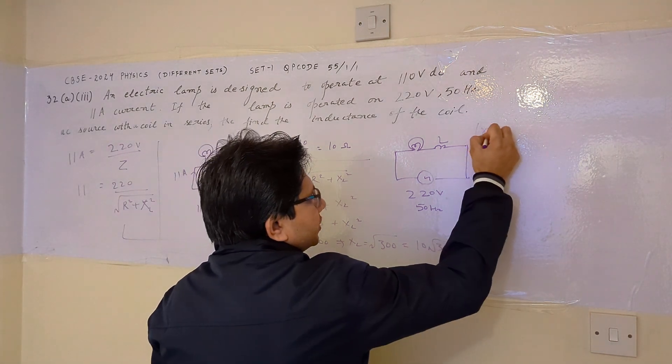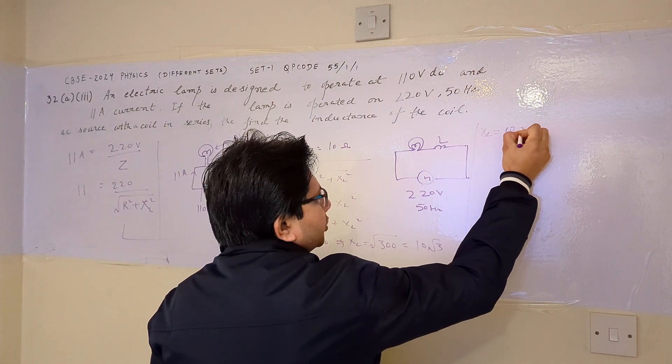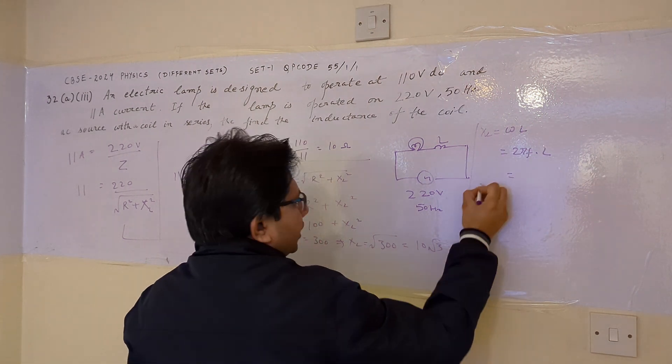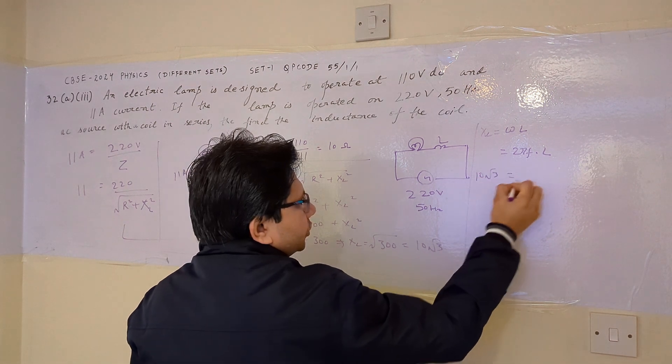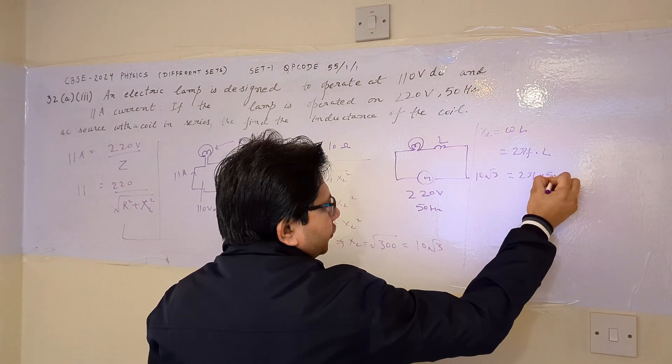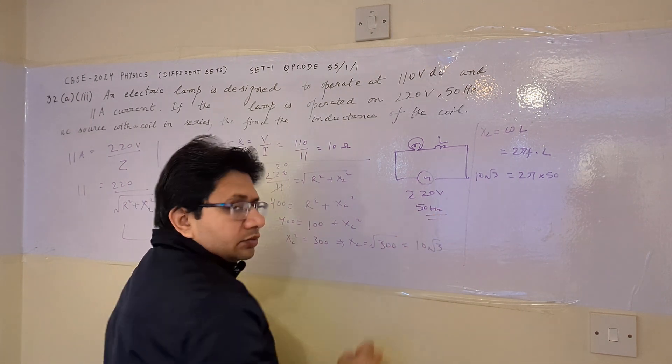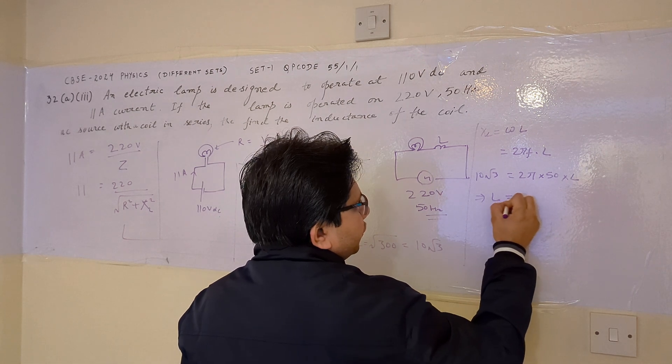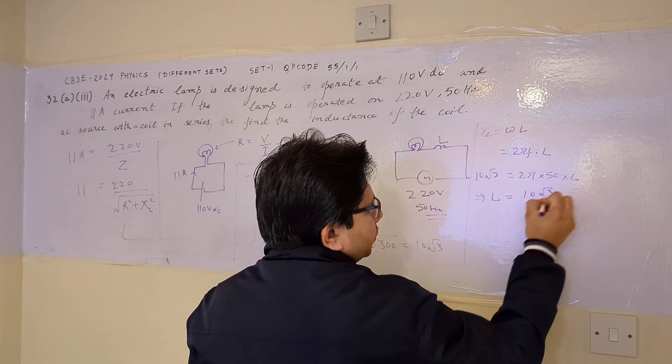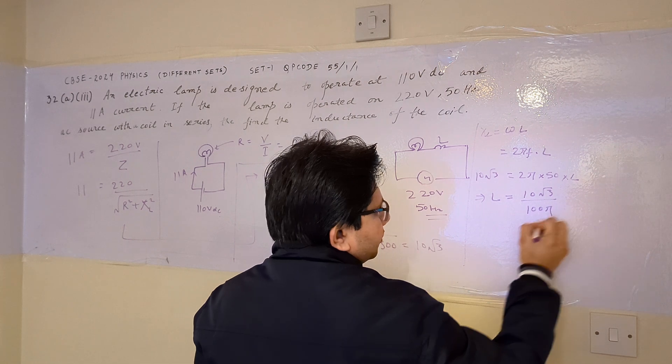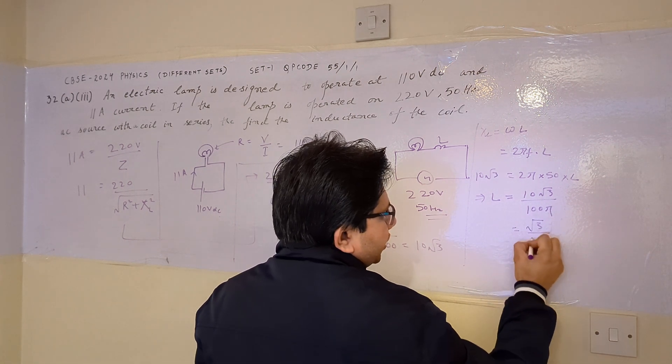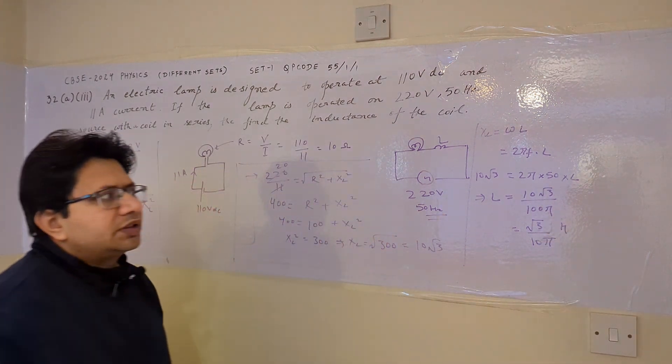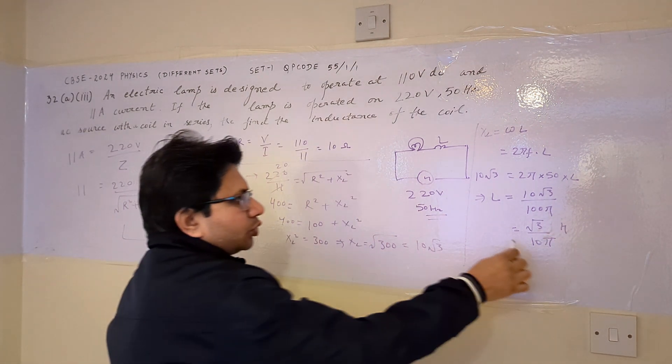Now the formula for inductive reactance is omega L, where omega is 2 pi f multiplied by L. XL we have calculated as 10 root 3. This equals 2 pi into 50, which is the frequency in Hertz of the applied signal, multiplied by the inductance. From this, we get the value of inductance as 10 root 3 divided by 100 pi, which equals square root 3 upon 10 pi Henry. So this is the value of the inductance in Henry: square root 3 upon 10 pi.